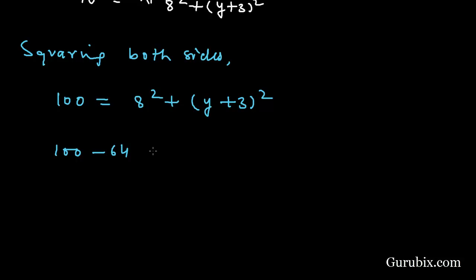And here we have Y square plus 6Y plus 9 when we expanded this (Y plus 3) whole square. Finally this equals Y square plus 6Y minus 36 equals 0.